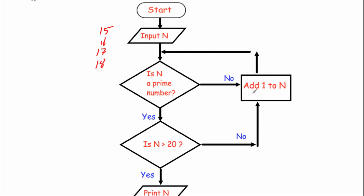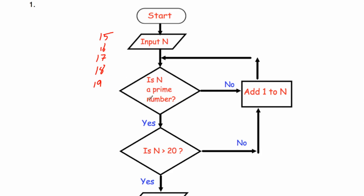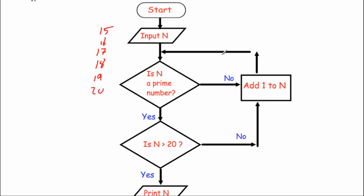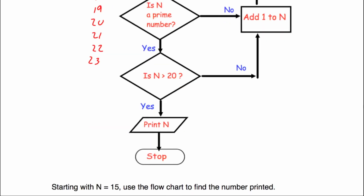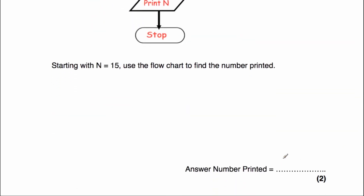Is 18 a prime number? No — add one: 19. Is 19 a prime number? Yes. Is 19 greater than 20? No — add one: 20. Is 20 a prime number? No — add one: 21. Is 21 a prime number? No — add one: 22. Is 22 prime? No — add one: 23. Is 23 prime? Yes. Is 23 bigger than 20? Yes — so we print N. The answer is 23.